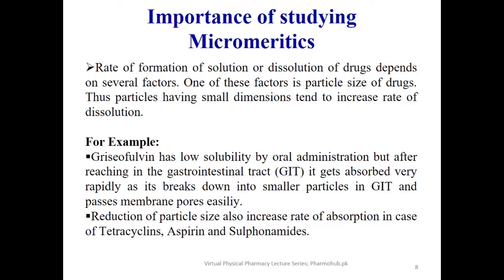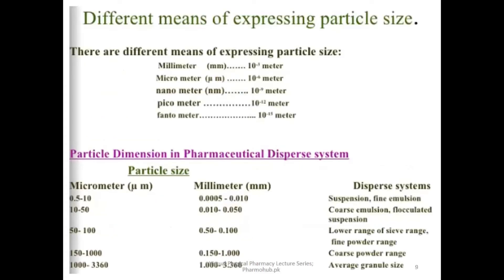Small particles allow further membrane uptake. The different means of expressing particle size are millimeter, micrometer, nanometer, picometer, and femtometer. For example, 0.5 to 10 micrometers corresponds to suspension and fine emulsions; 10 to 50 micrometers corresponds to coarse suspensions; and the low range of sieve size corresponds to fine powder range and so on.